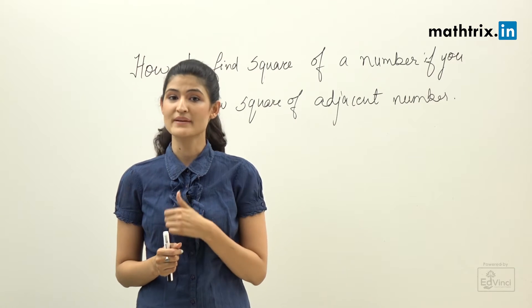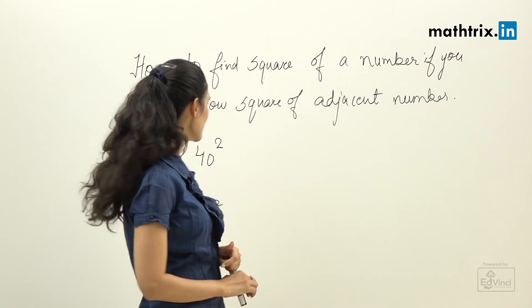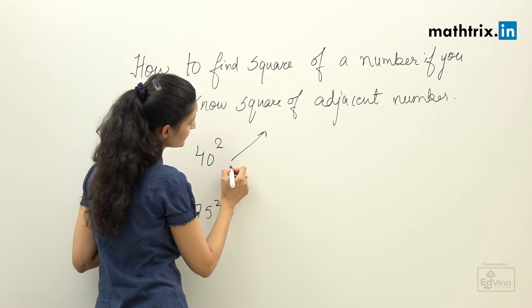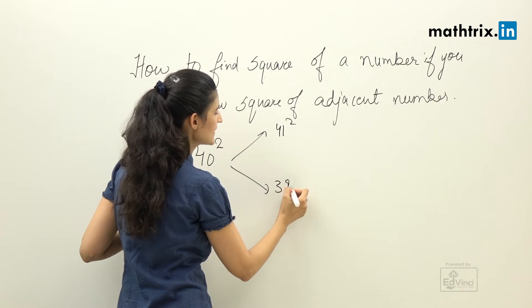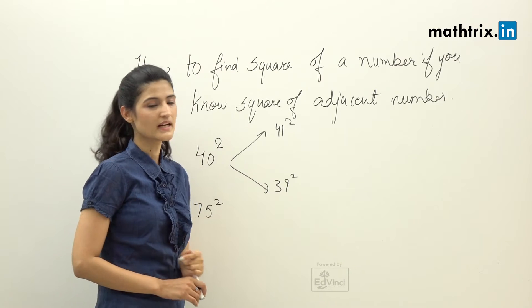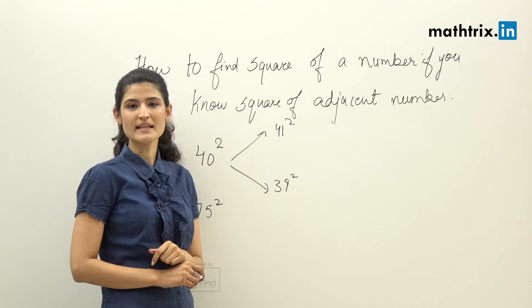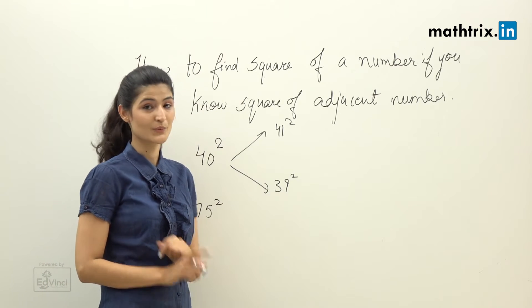In just two seconds. So let's have a look. For example, if we have 40 square, so we can find 41 square and 39 square in just two seconds. Before going forward, I will tell you the answer. 41 square is 1681, and 39 square is 1521.